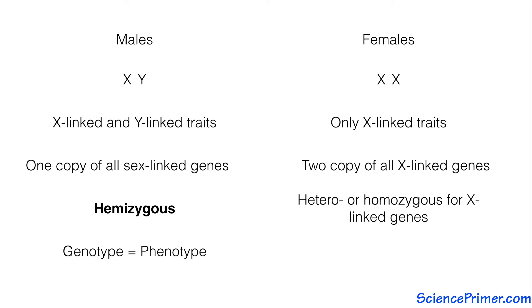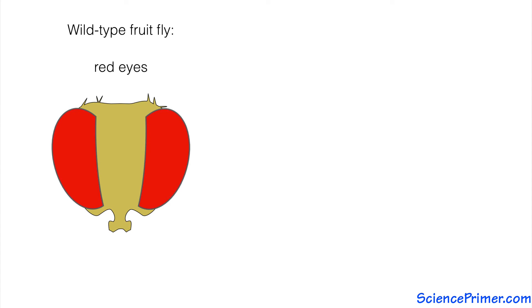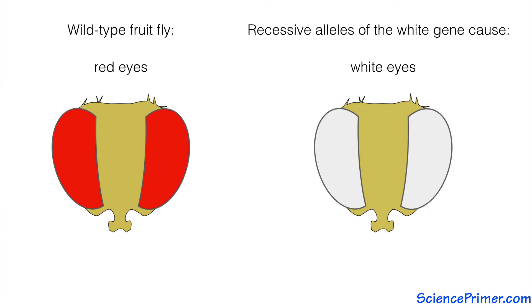Since the X chromosome is bigger and contains more genes than the Y chromosome, most sex-linked traits are X-linked traits. Wild-type fruit flies have dark red eyes, but there are recessive alleles of this eye color gene, called the white gene, that cause individuals to have white eyes. As a recessive trait, the white-eyed phenotype is masked by the presence of a wild-type red encoding allele.